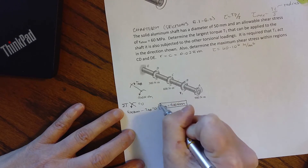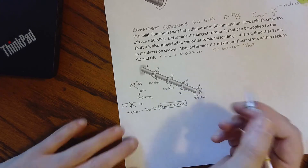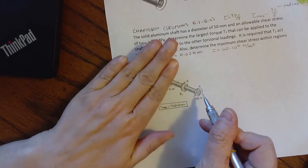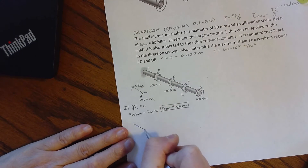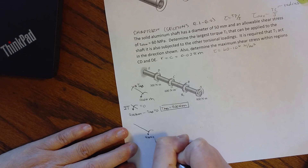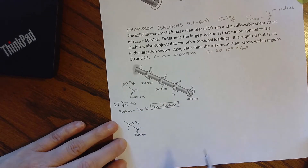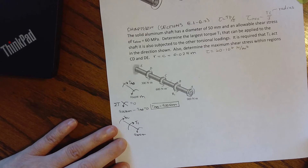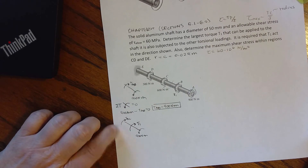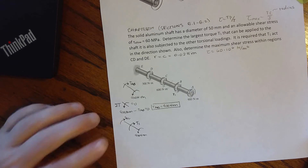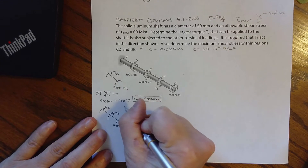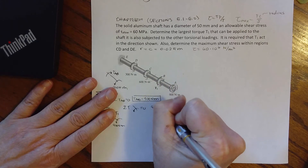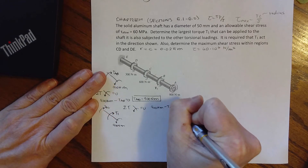For the next free body diagram, we cut between B and C. We have the 900 N·m torque, the unknown T1 in its required direction, and we assume positive T_BC. Looking at this, to balance everything out T_BC is likely coming toward us, which would be negative — but we'll work through it. Summing torques with positive defined as coming toward us: 900 N·m minus T1 minus T_BC equals zero.